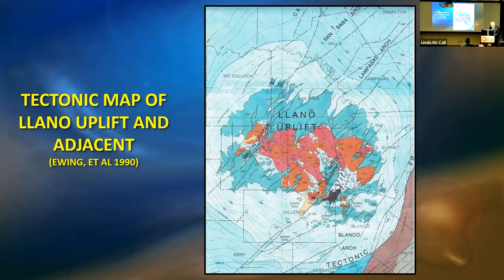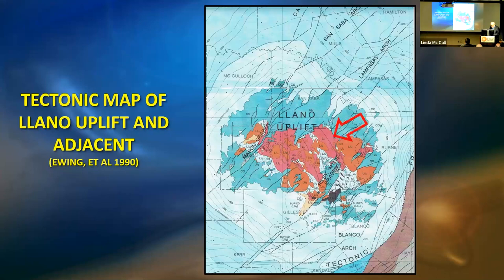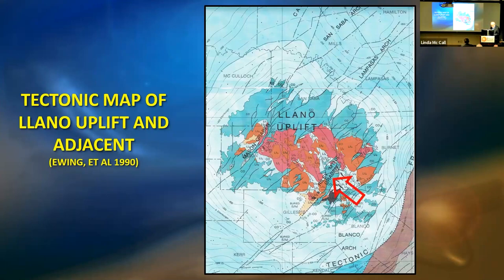It may seem strange to start a stratigraphic paper talking about tectonics and structure, but the paleotopography of the Wichita Paleoplane — the weathered land surface that developed across the Llano Uplift during the nearly 200 million years after the Ouachita orogeny and before the Cretaceous transgression — was strongly influenced by Wichita fault patterns and subsequent differential weathering. Some of the longer faults have curved segments that served as transfer faults, such as the Riley Mountain fault, with regional faults having substantial vertical displacement in excess of 3,000 feet, including the Mason fault, the Riley Mountain fault, and the Marble Falls fault.